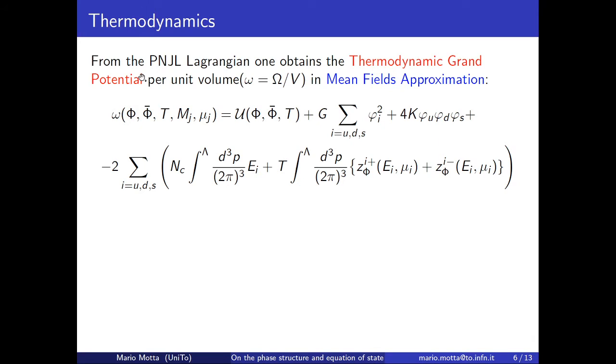From the PNJL model, in mean field approximation, it's possible to obtain the thermodynamic grand potential per unit volume ω. Omega is shown here. U is the gauge potential, these two terms are the chiral term.